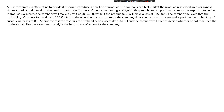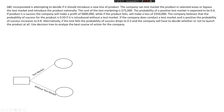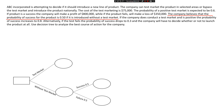We start with an initial decision node (square) representing two choices: conduct the test market or launch without a test market. If we launch without the test market, the probability of success is 50% and the probability of failure is also 50% — it is equally likely to succeed as to fail.